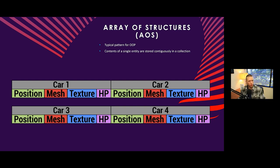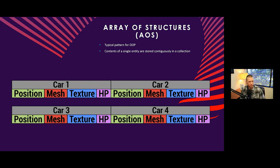You can see the way this memory is stored: if we look at all the position values, there's a big gap in memory between the position of the first car and the position of the second car, the third car, and so on. So if we're bringing these objects into the cache through this type of structure, we might end up with cache misses if we're trying to modify the position of many car components.